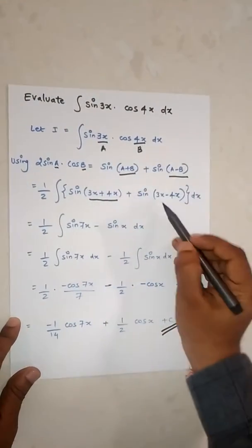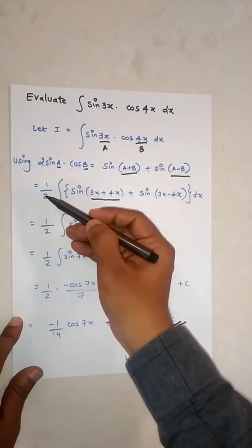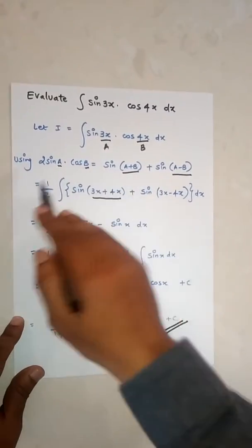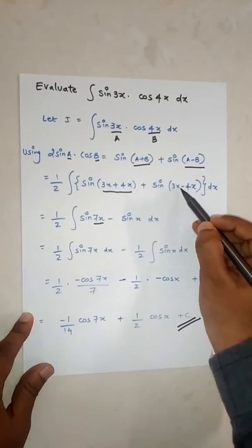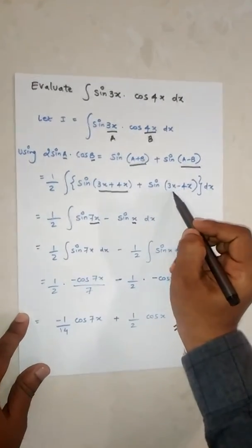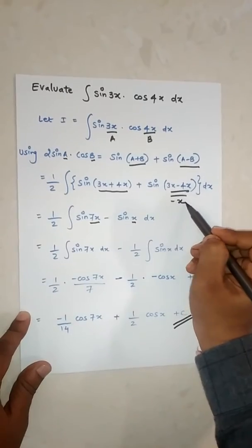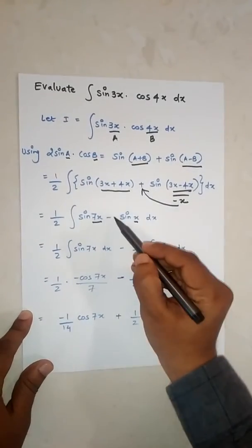Half will remain as it is outside the bracket, so half sine of 7x, and sine of negative x. Due to this minus, sine will get changed. This becomes half sin(7x) minus half sin(x) dx.